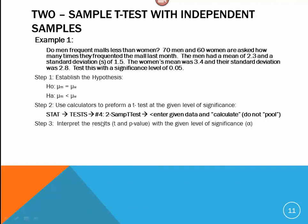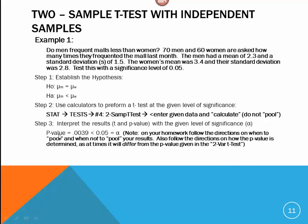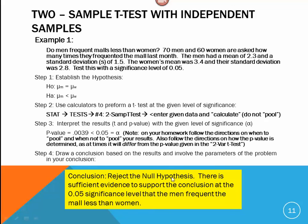Now, we interpret the results with the given level significance. Our p-value was 0.0039 if I round it to four decimal places. And with my significance level being 0.05, that means that my p-value, my probability, was less than 5%. And so, the conclusion for this is we are going to reject the null hypothesis. With a p-value that's lower than my significance level, that means there is significant evidence to support the conclusion that the men frequent in the mall less than women at the 5% significance level.